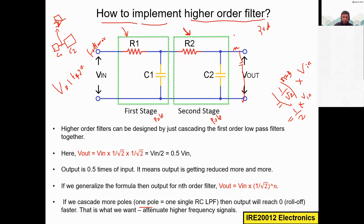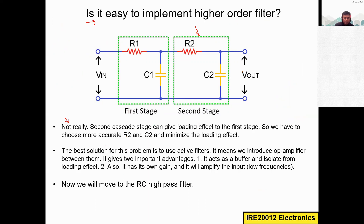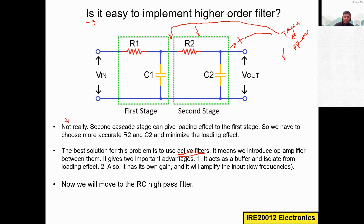We need to choose more accurate R2 and C2 values, so the best solution is to use active filters. By definition, active filters use either transistors or operational amplifiers in the filter design. Introducing the operational amplifier converts the passive filter into an active filter.